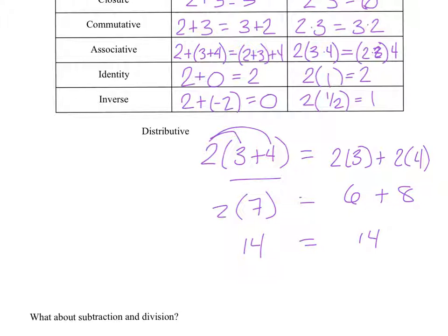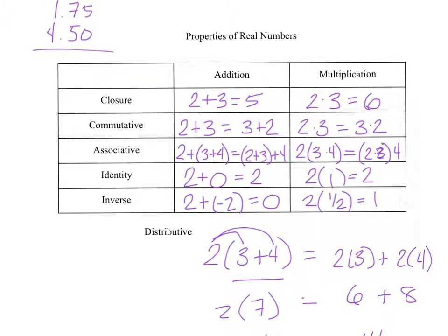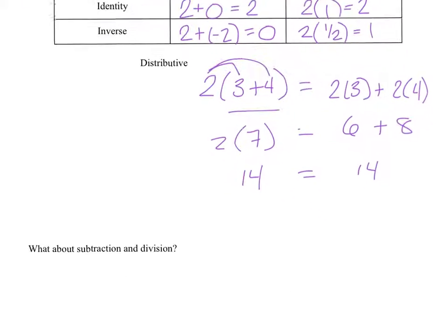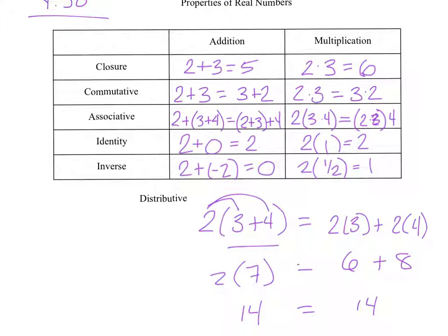You'll notice that up here I only did addition and multiplication. A lot of times the question is — hopefully you're thinking about it — what about subtraction and division? Unfortunately, subtraction and division do not work the same way. We do not have the commutative property or the associative property for subtraction and division. So only use these properties when you're doing addition and multiplication. That's enough for this presentation.